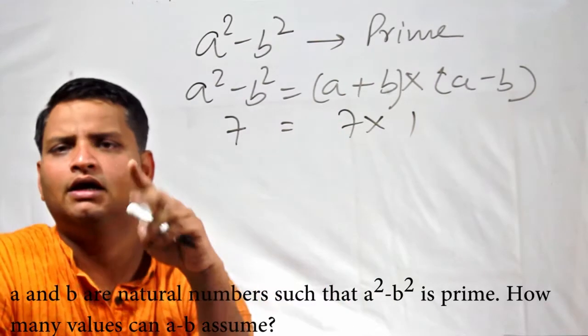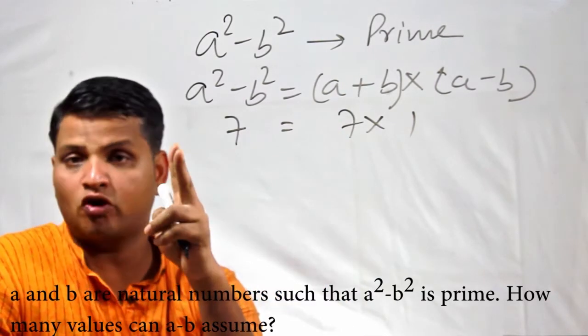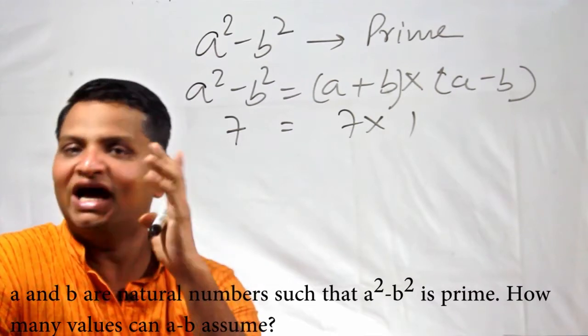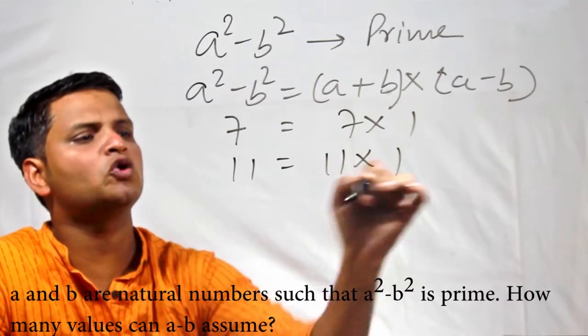That is, a prime number is divisible by either 1 or the number itself. So, if I want to write any prime number as a product of two numbers, one of them has to be 1. For example, 11 can be written as 11 × 1 only.